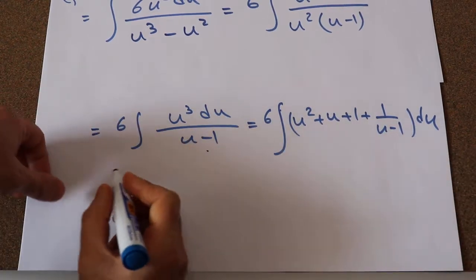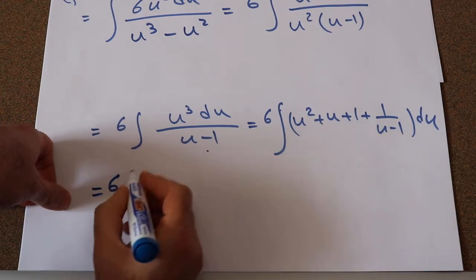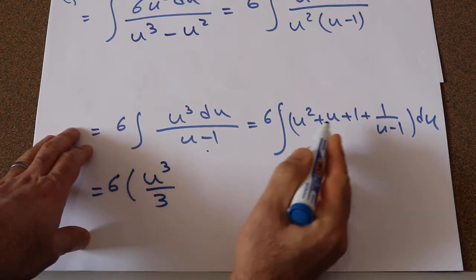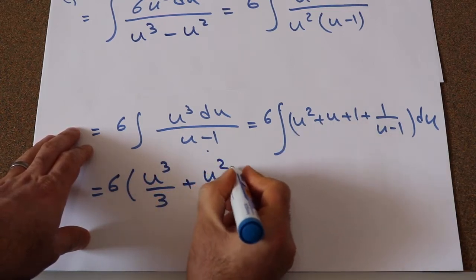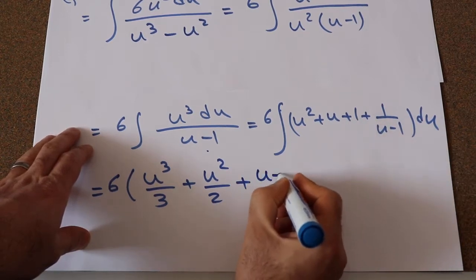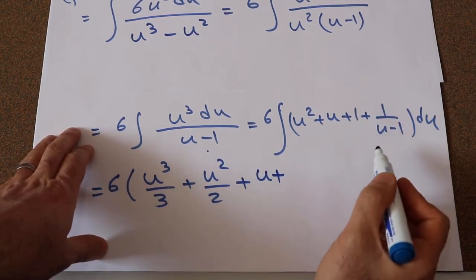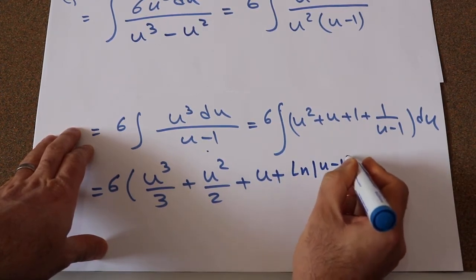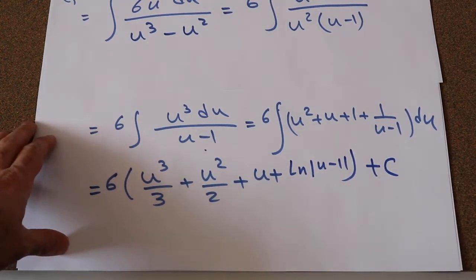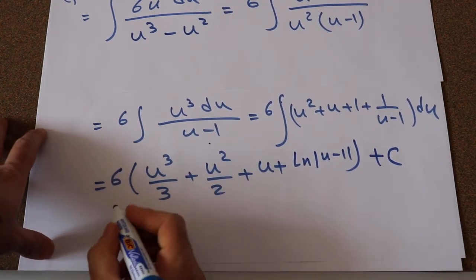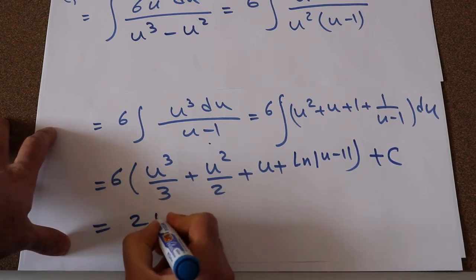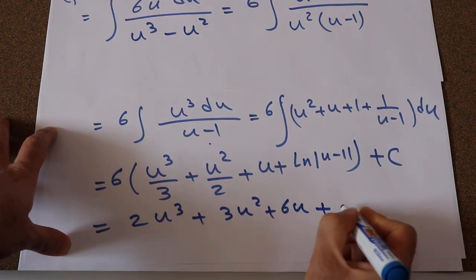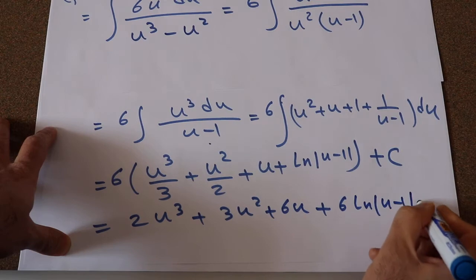Now we have this integral, which is relatively straightforward to calculate. The integral gives 6 times: the integral of u² is u³/3, the integral of u is u²/2, the integral of 1 is u, and the integral of 1/(u minus 1) from the table of integrals is ln|u minus 1|, plus C, the constant of integration. Therefore, this equals 2u³ plus 3u² plus 6u plus 6·ln|u minus 1| plus C.